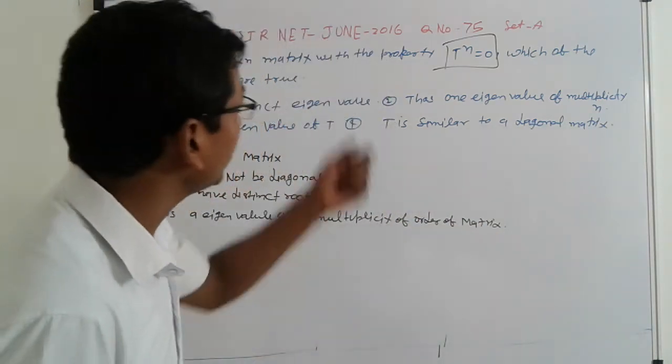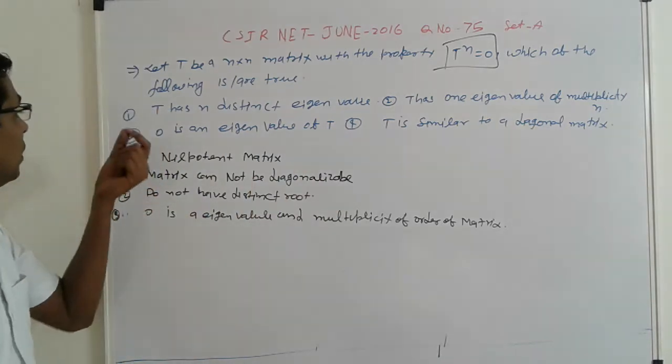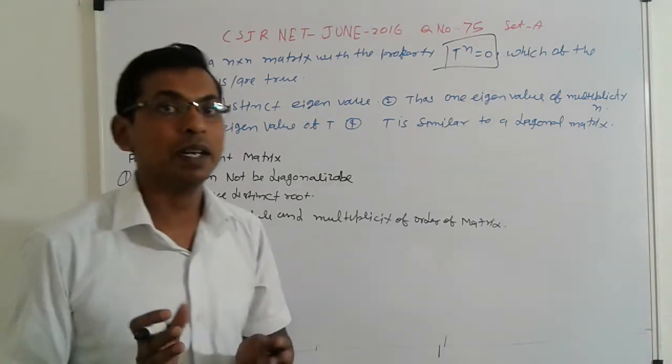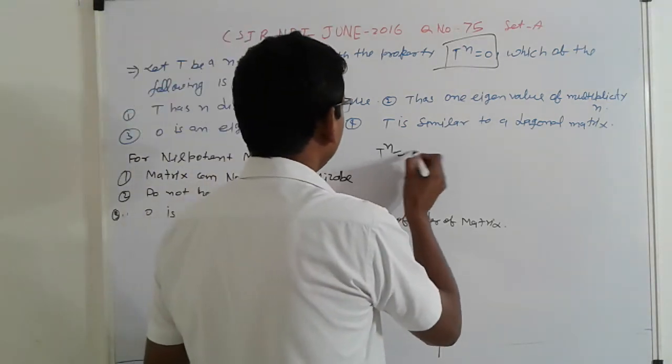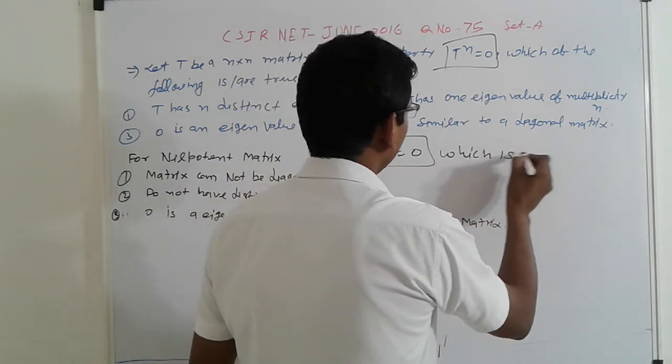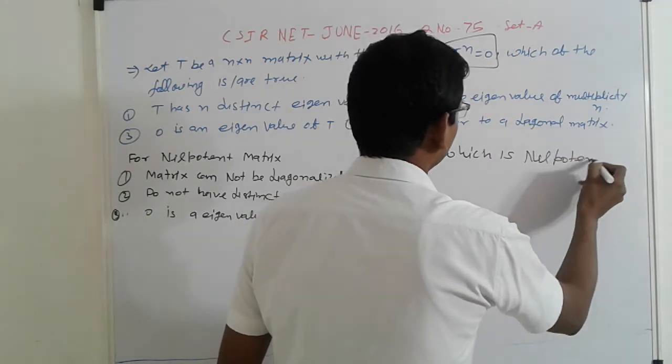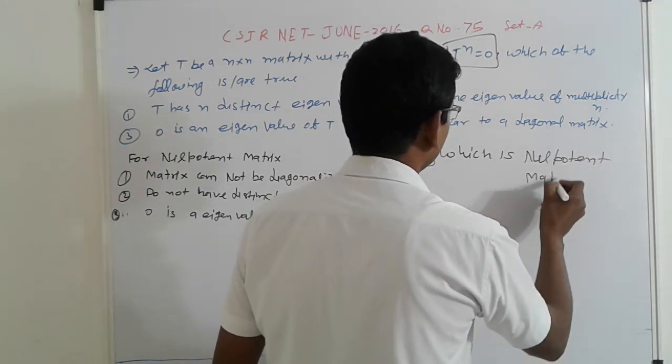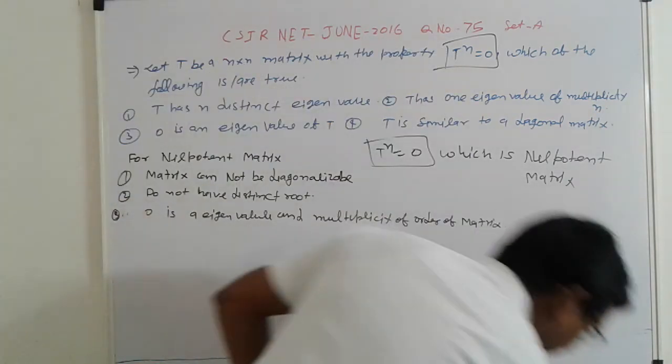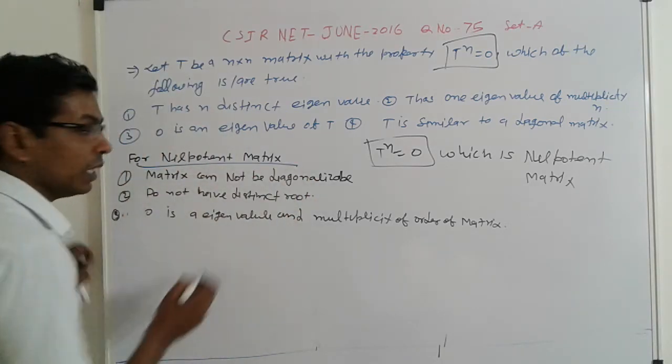So first, before we do this, we inform you that for nilpotent matrix, this is the properties of nilpotent matrix. If T raised to n is equal to 0, which is nilpotent matrix.